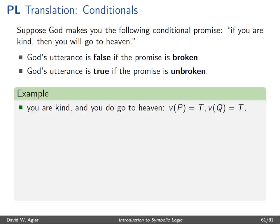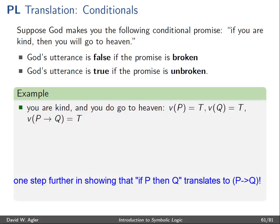We would say that God's utterance is false if his promise is broken, and true if the promise is unbroken. Suppose you are kind and you do go to heaven — God's promise is unbroken; in fact, God fulfills his promise. Given that the promise is unbroken, God's utterance is true, so the conditional 'if you are kind then you will go to heaven' is true. The same holds for the material conditional: if P is true and Q is true, then the whole complex conditional is true.